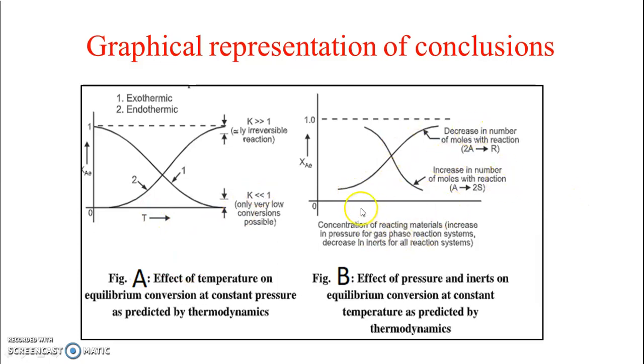About this pressure, this graph is also indicating the same things. This is a concentration, means indirectly pressure, increasing pressure or decreasing inerts. So, increase in pressure and decrease in pressure will have effect on conversion. This can be very well explained using this graph.